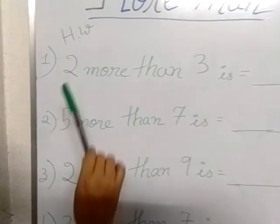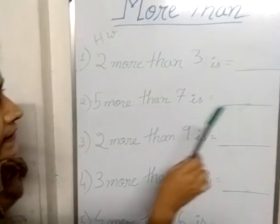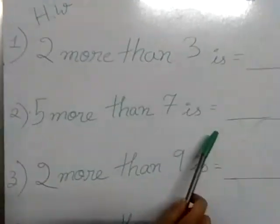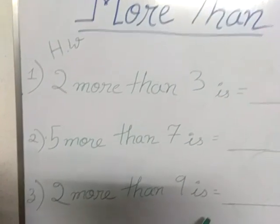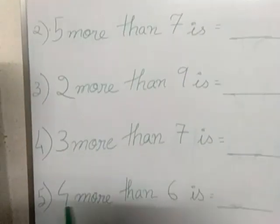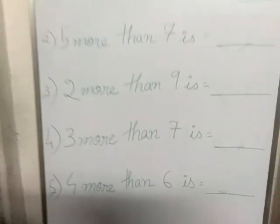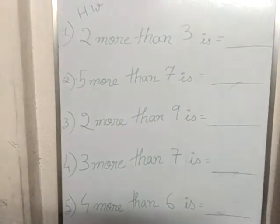Now your homework is 2 more than 3, you count and write. 5 more than 7 is. 2 more than 9 is. 3 more than 7 is. And 4 more than 6 is.